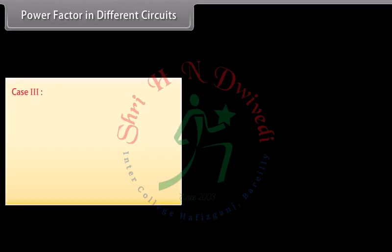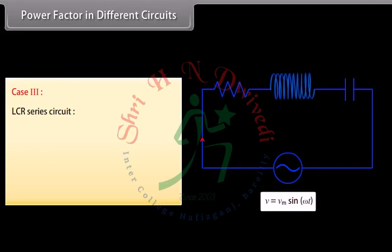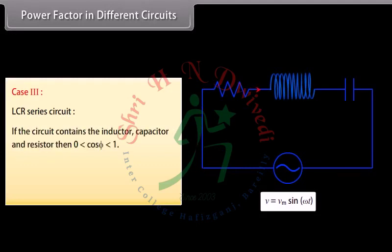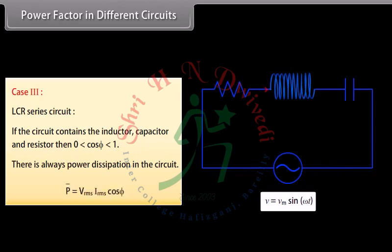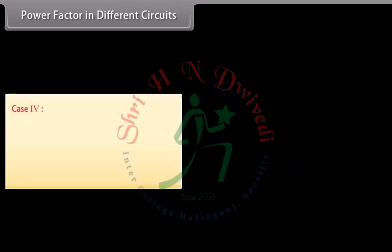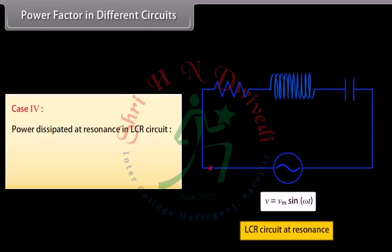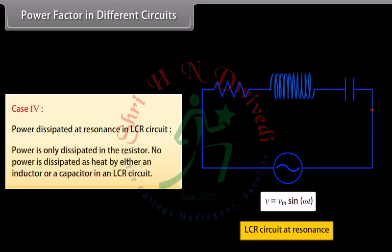Case 3 — LCR series circuit: if the circuit contains inductor, capacitor, and resistor, then cos φ lies between 0 and 1, and there is always power dissipation. P̄ = Vrms × Irms × cos φ. Case 4 — Power dissipated at resonance in LCR circuit: power is only dissipated in the resistor; no power is dissipated as heat by either the inductor or the capacitor.